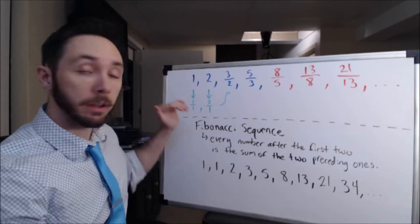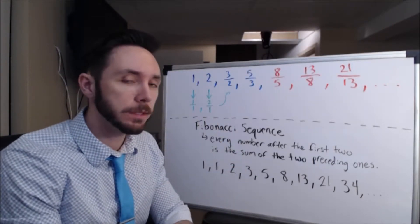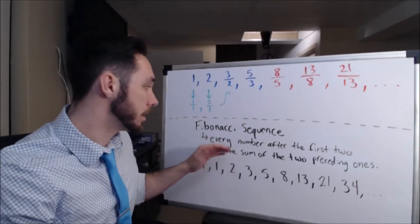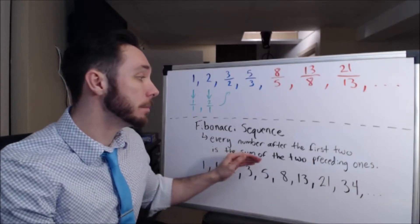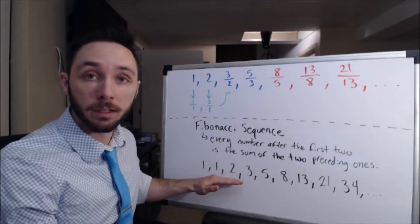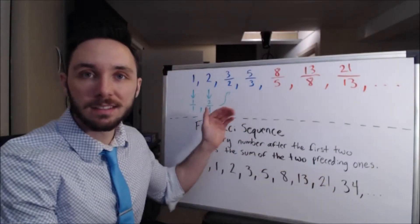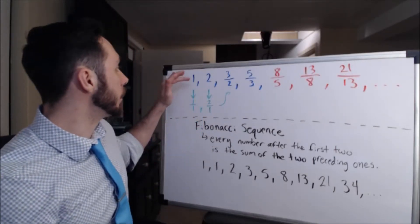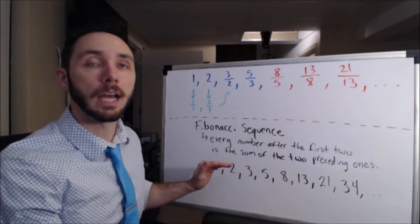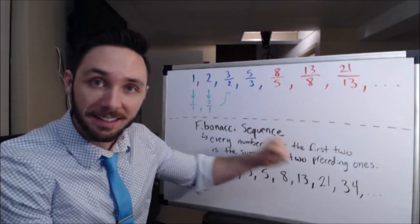If you strategically rewrite 1 as 1/1 — since the rest are fractions, why not make 1 a fraction — and rewrite 2 as 2/1, it becomes clearer if you're familiar with the Fibonacci sequence. The Fibonacci sequence states that every number after the first two (which are 1 and 1) is the sum of the two preceding ones: 1, 1, 2, 3, 5, 8, and so on. As you can see, it snakes its way into our domain restrictions. We have 1/1 (first two Fibonacci terms), 2/1 (second and third terms), 3/2 (third and fourth), and so on.